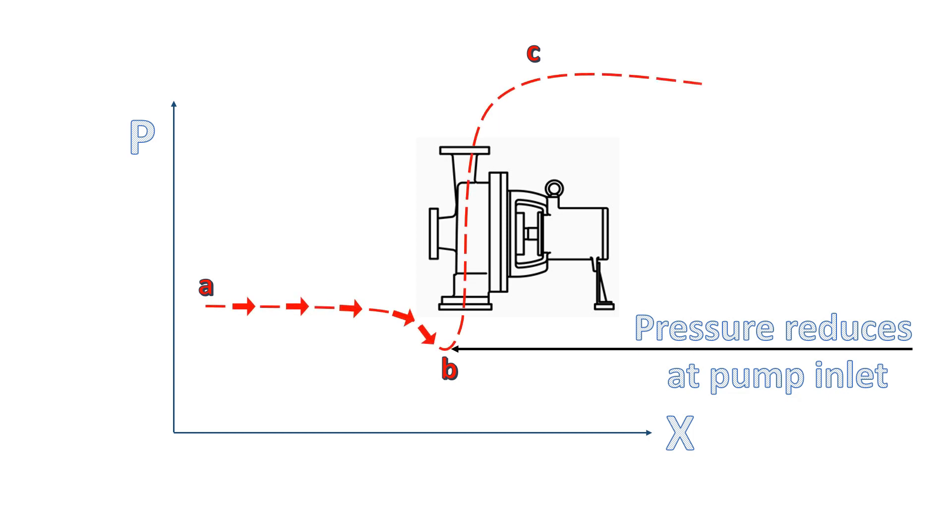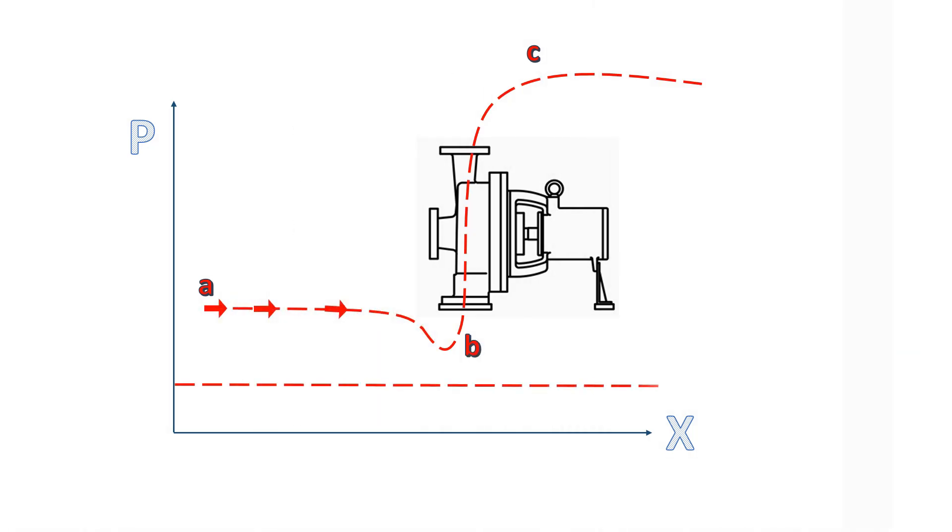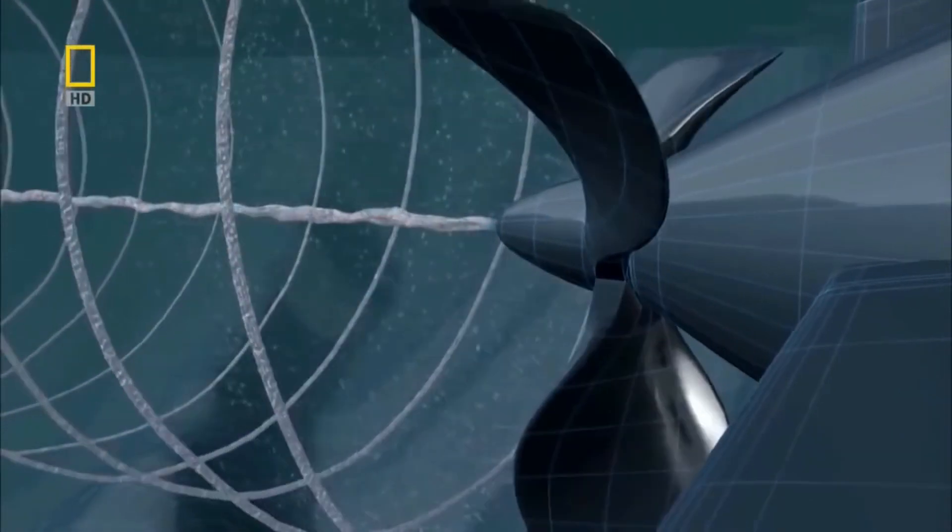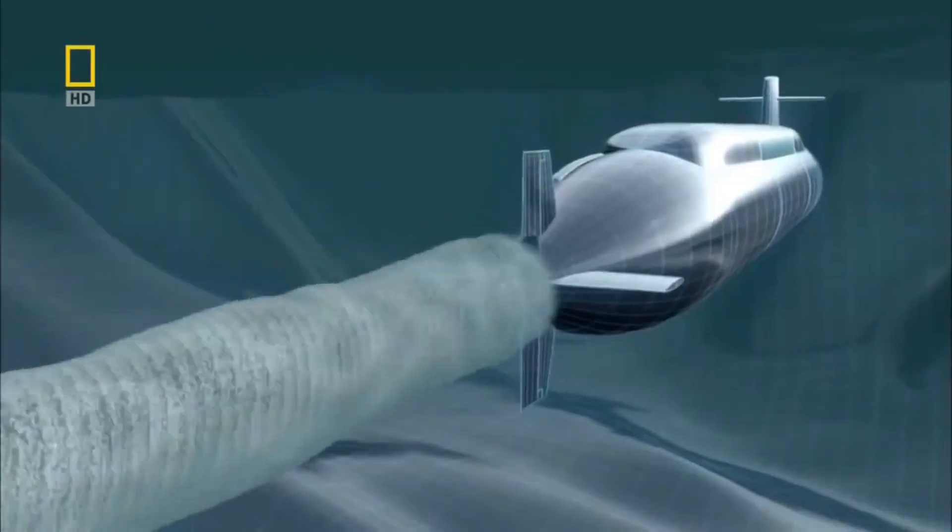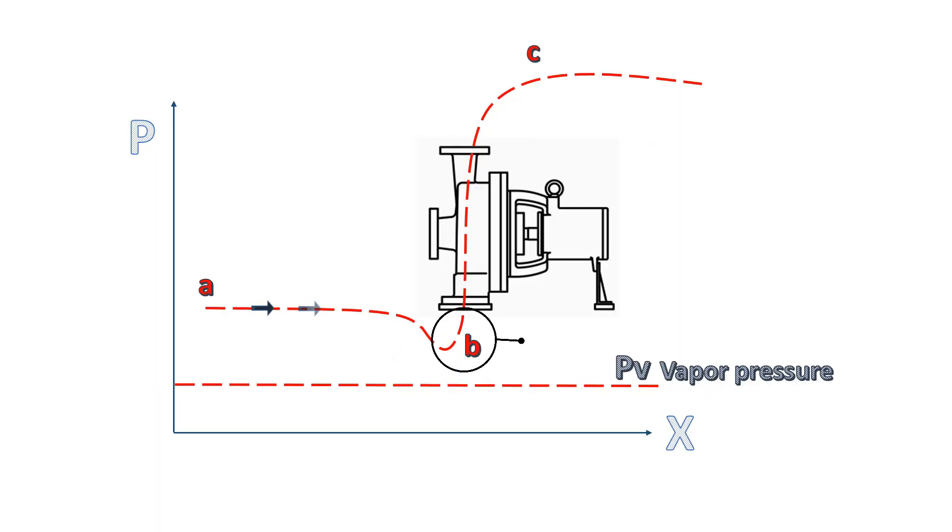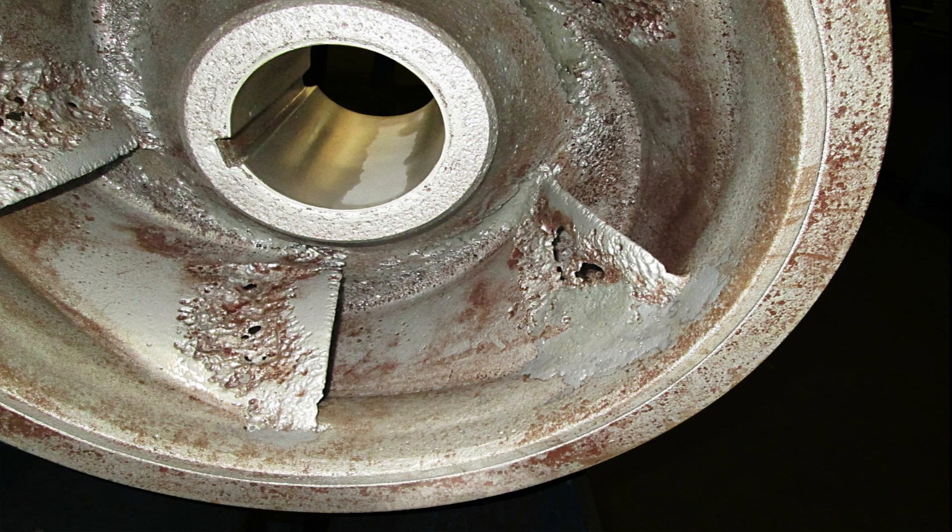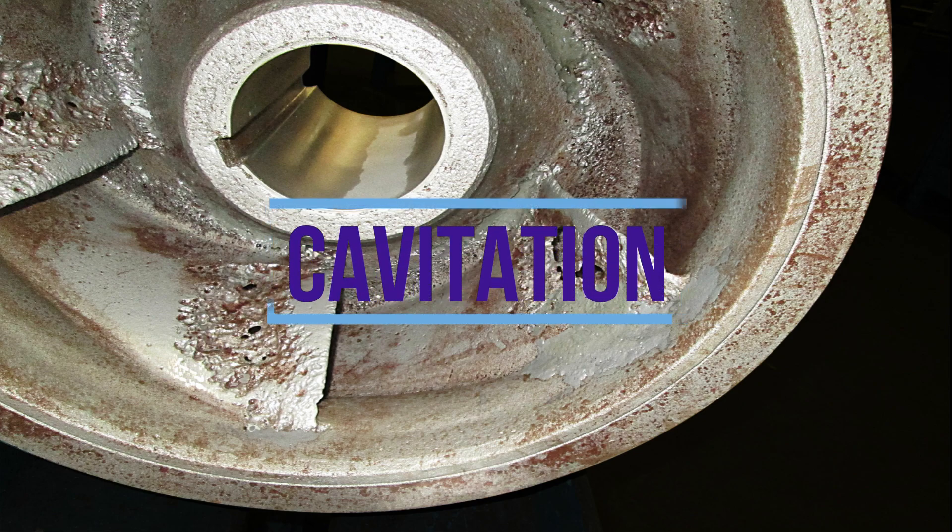The net gain in the pressure between point A and C is known as total developed head. This straight line shows the vapor pressure corresponding to the fluid temperature. If the pressure at pump inlet drops below vapor pressure, the fluid will evaporate and generates small vapor bubbles. These bubbles carried along with the fluid and collapse instantly when they get into areas of higher pressure. This will result into excessive noise and vibration due to collapse of vapor bubbles. Also, it will damage the pump impeller and casing due to erosion. This whole phenomenon is known as cavitation.